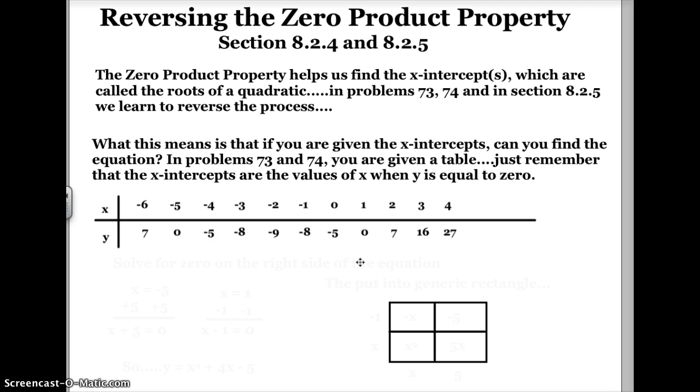The first thing I have to do is I have to find the x-intercepts. And remember the values of x when y is zero are the x-intercepts. So I'm going to go down here and look for y is zero. Here's one point where y is zero, where x is equal to negative 5. That's one point. Here's another place where y is zero, when x is equal to 1.